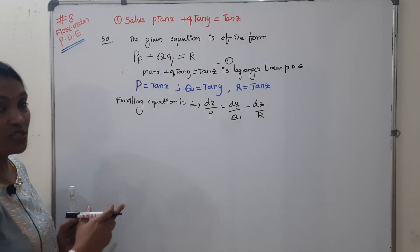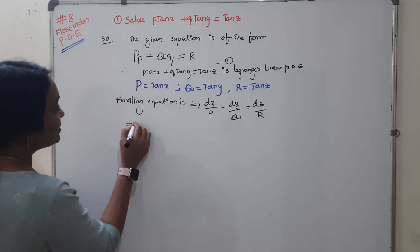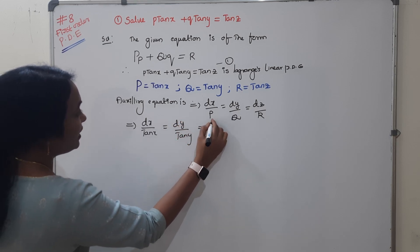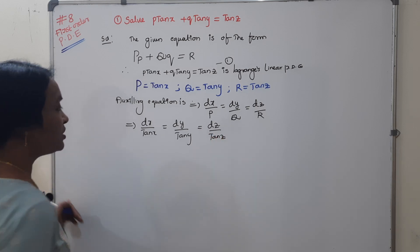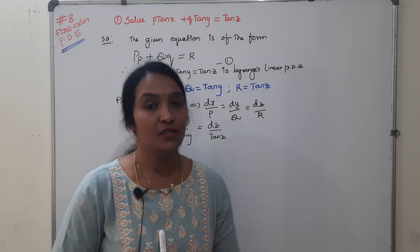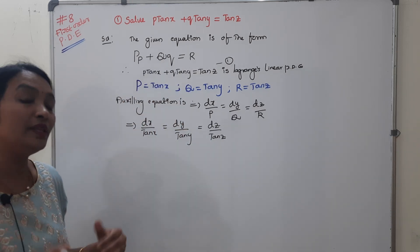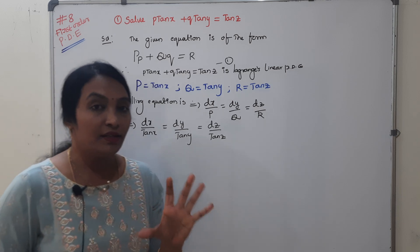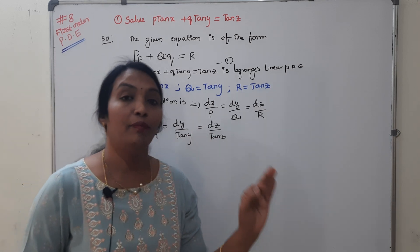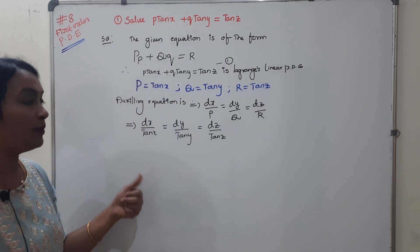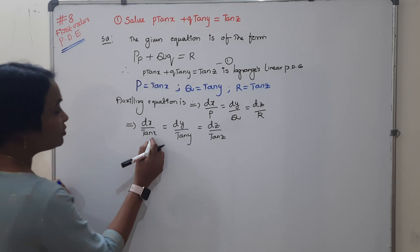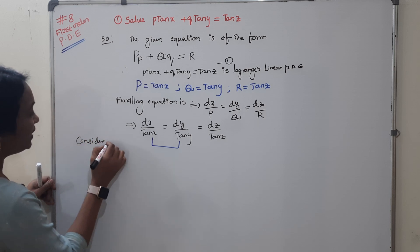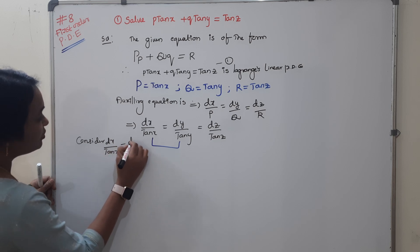The auxiliary equation is dx/P = dy/Q = dz/R, that is dx/tan(x) = dy/tan(y) = dz/tan(z). In the method of grouping, we group any two fractions. Consider the first two: dx/tan(x) = dy/tan(y), which is variable separable.